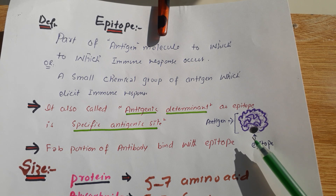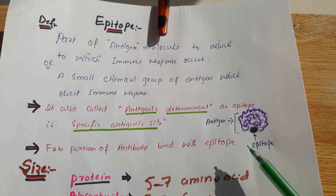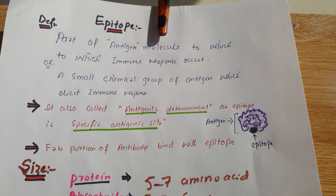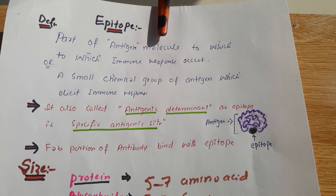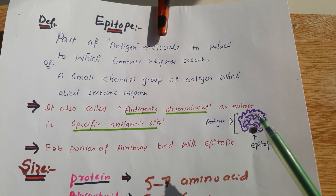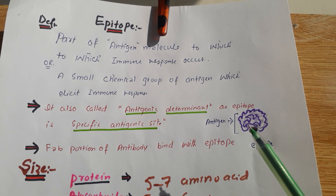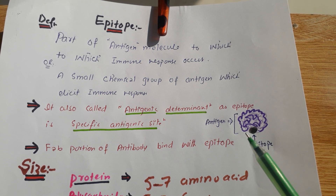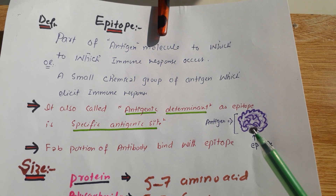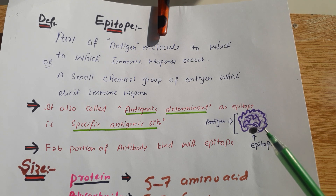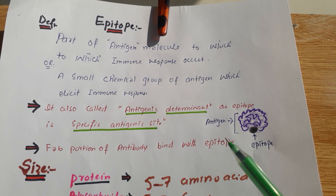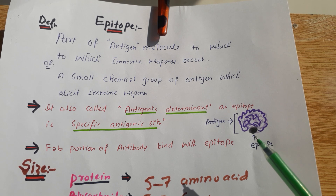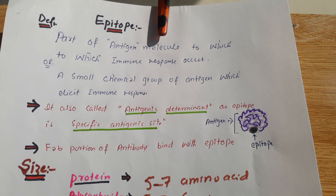So this is called epitope. Now the antibody which is going to react to this antigen — which is going to attach with this antigen — will attach specifically to this part of the antigen, which is the epitope. With this epitope, the antibody is going to attach.